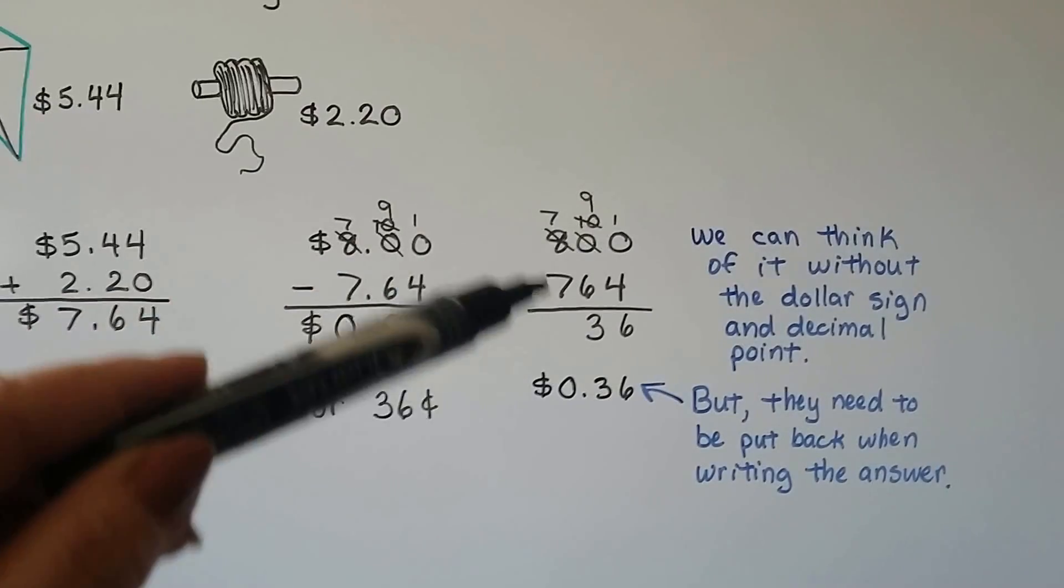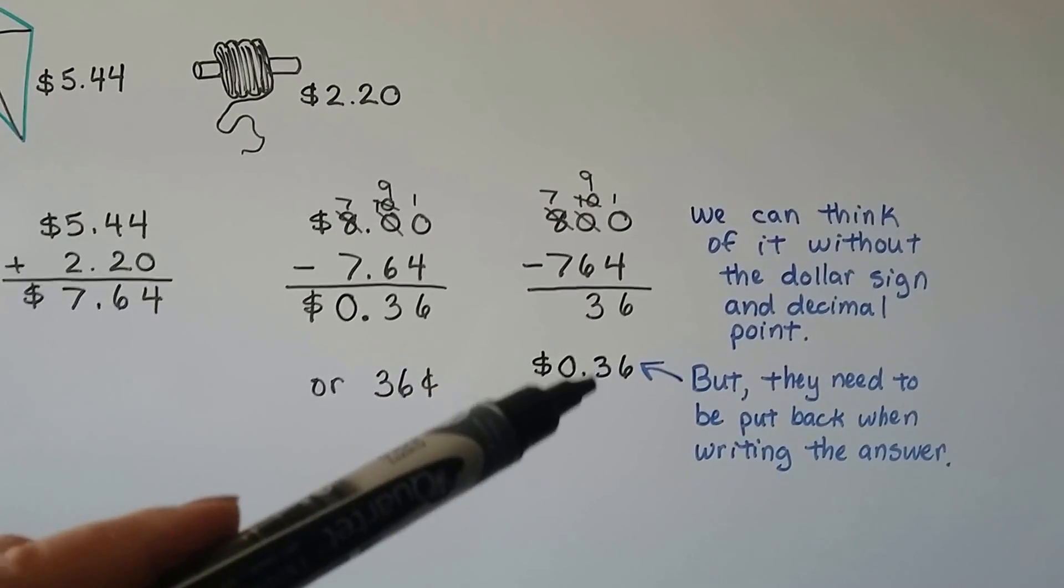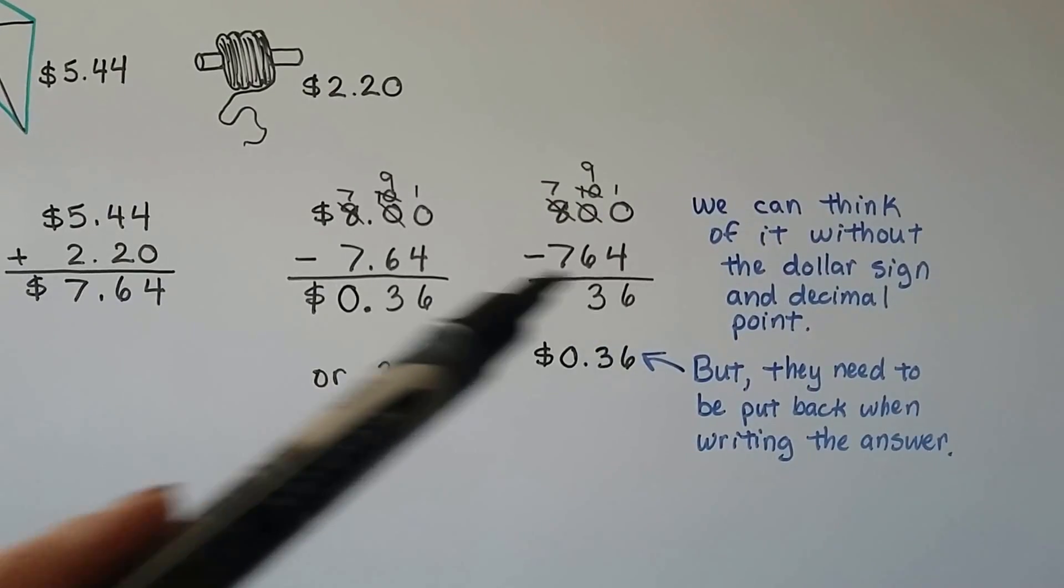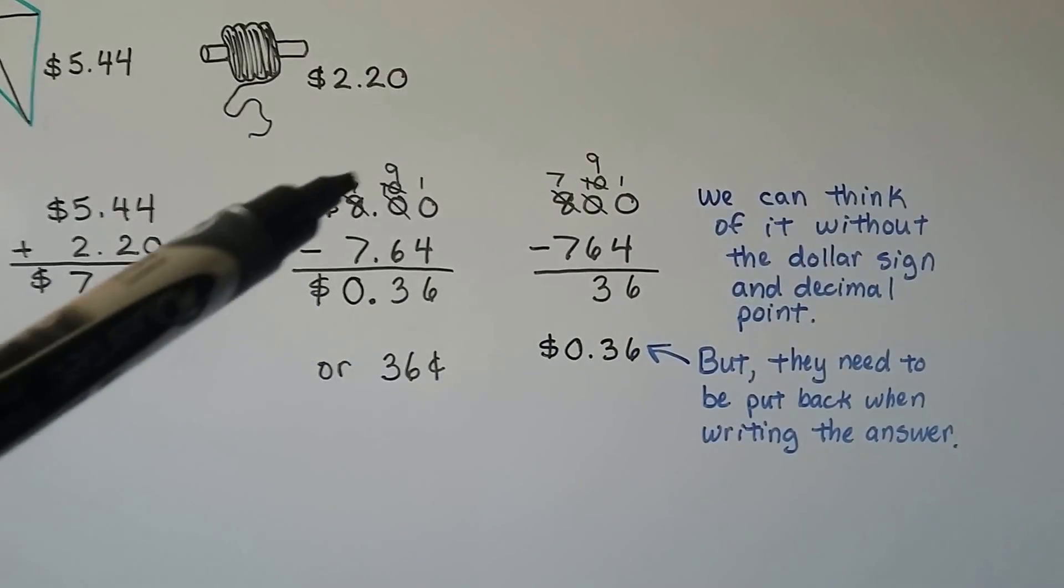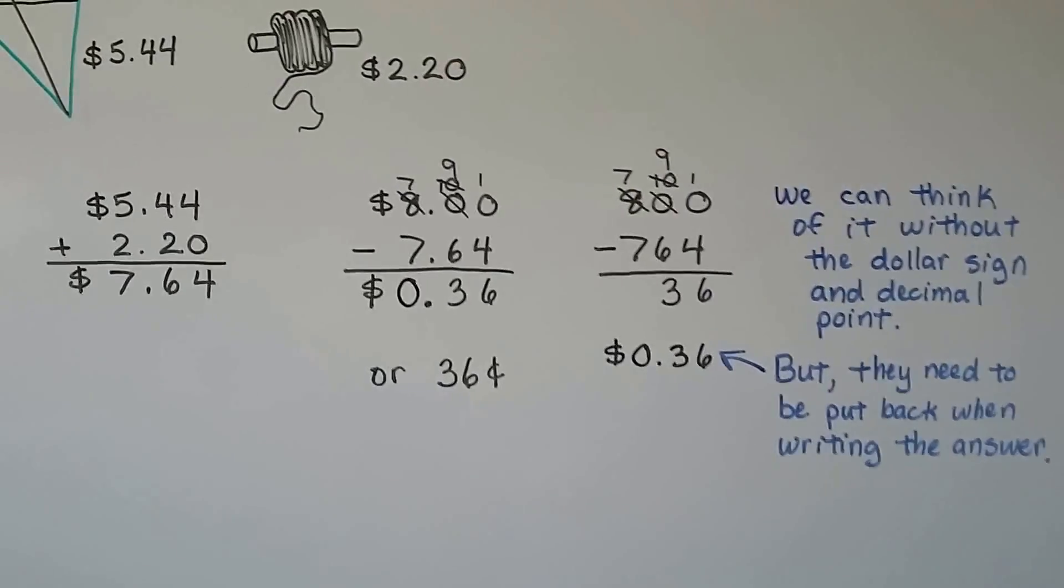So, you can look at it this way without the signs and symbols, but they have to be put back on at the end. It's the same thing. We're going to get the same number, except if we do it this way, we're going to have our decimal point and our dollar sign.